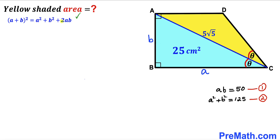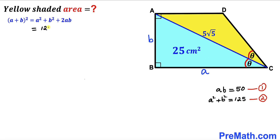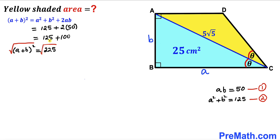Using the identity (a + b)² = a² + b² + 2ab, we substitute a² + b² = 125 and ab = 50: (a + b)² = 125 + 2(50) = 225. Taking the square root of both sides gives a + b = 15. Call this Equation 3.